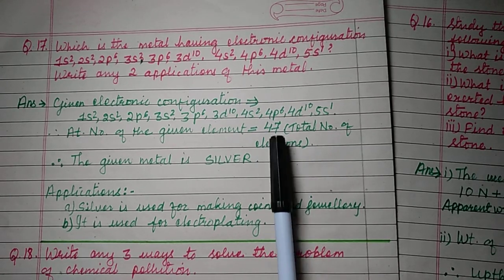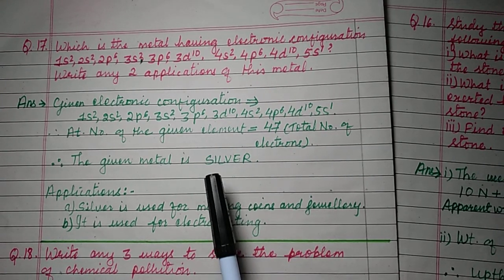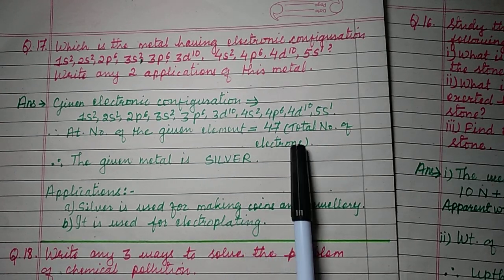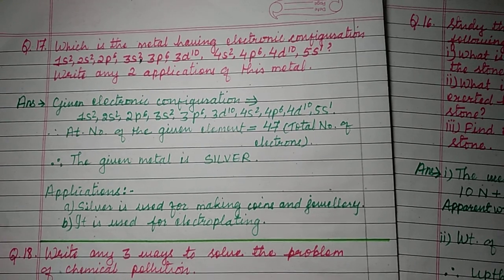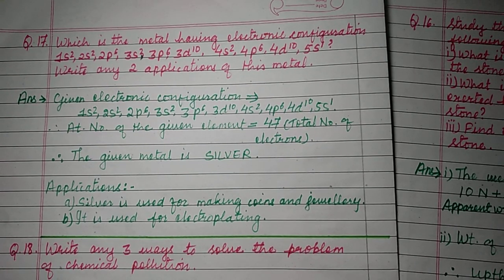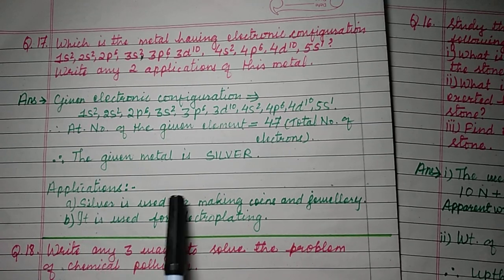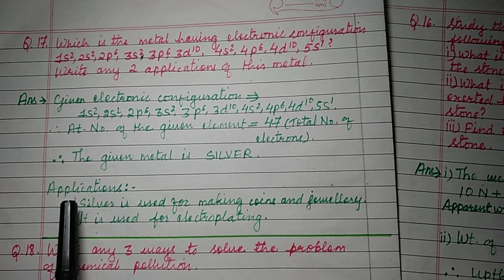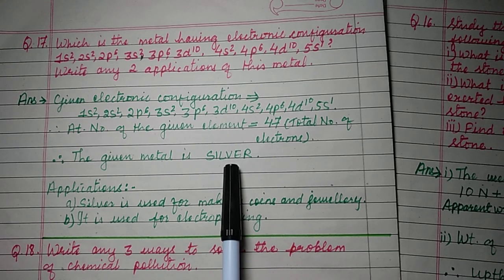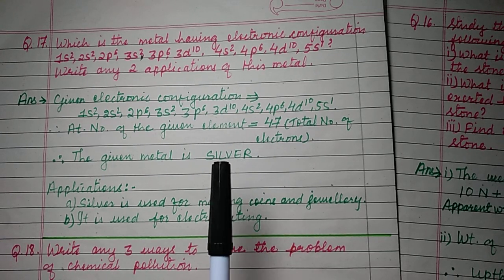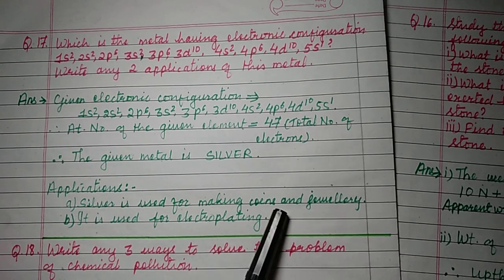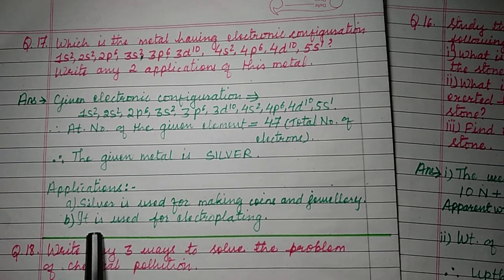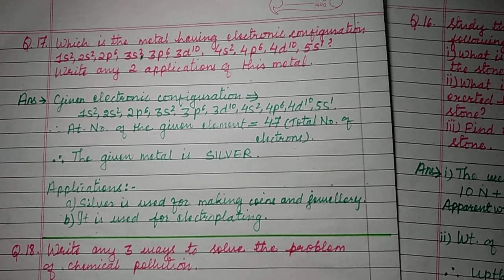So the element with atomic number 47 is silver. It is a metal. The applications of silver: silver is used for making coins and jewelry, and silver is used for electroplating. Very simple.